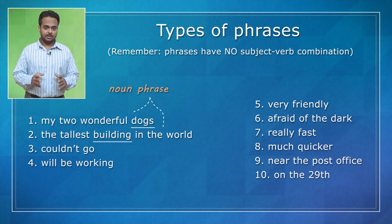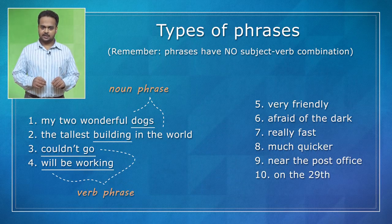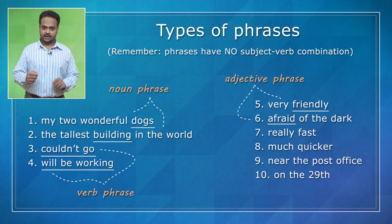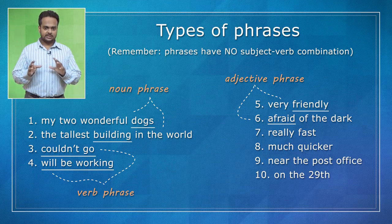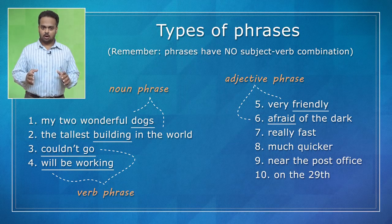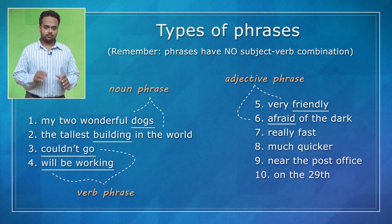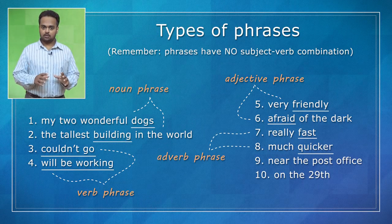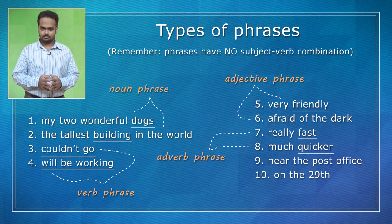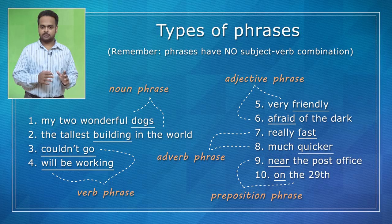What about 'couldn't come' and 'will be working'? These are verb phrases because they only have verbs in them. Similarly, we have the adjective phrases 'very friendly' and 'afraid of the dark.' These are adjective phrases because the focus is on 'friendly' and 'afraid' — the other words are only helping the main words, and the main words are adjectives. 'Really fast' and 'much quicker' are adverb phrases because the adverbs 'fast' and 'quicker' are the focus. And 'near the post office' and 'on the 29th' are preposition phrases because each tells us about place or time using the prepositions 'near' and 'on.'